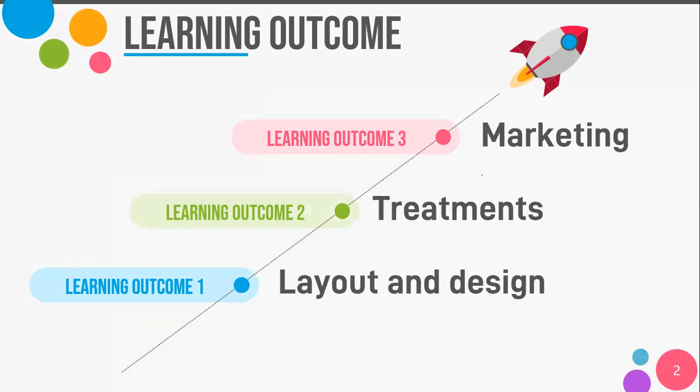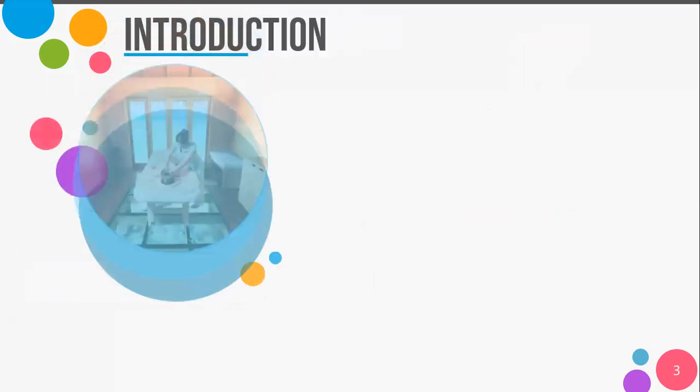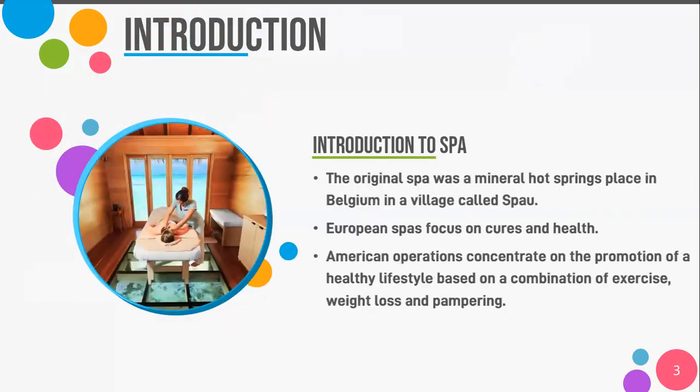We have three learning outcomes today. Learning outcome one is the layout and design of a spa. Learning outcome number two is the treatments included in the spa. And last but not least, learning outcome number three is marketing for a spa. First and foremost, spa is the foundation for a resort.